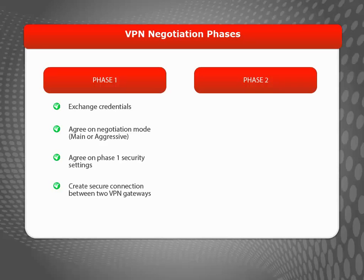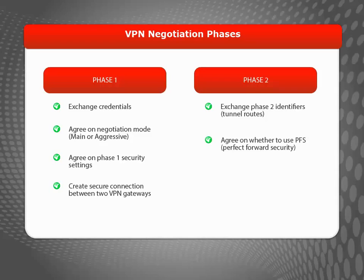Successful completion of Phase 1 negotiations results in a secure, encrypted channel through which the two devices can negotiate Phase 2. During Phase 2 of VPN negotiations, the devices exchange tunnel routes, agree on whether to use PFS, and agree on a set of Phase 2 security settings.